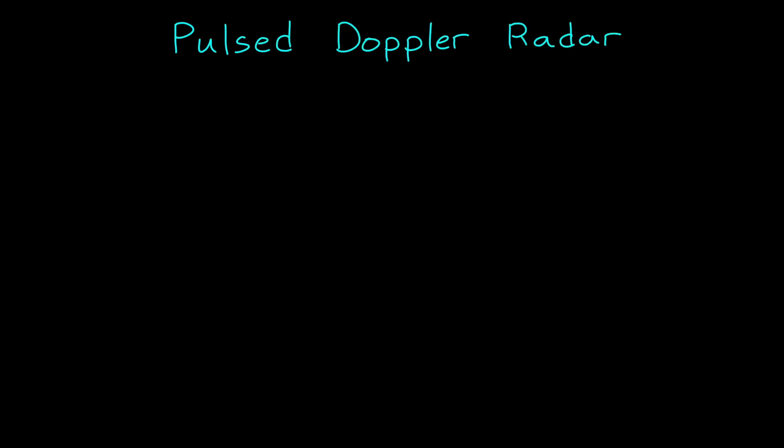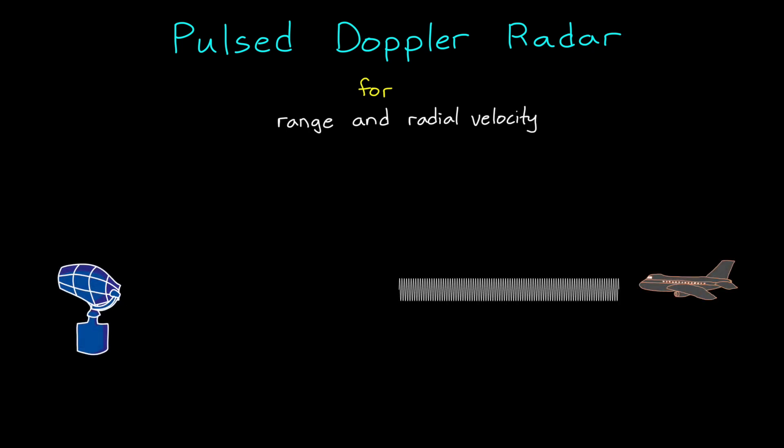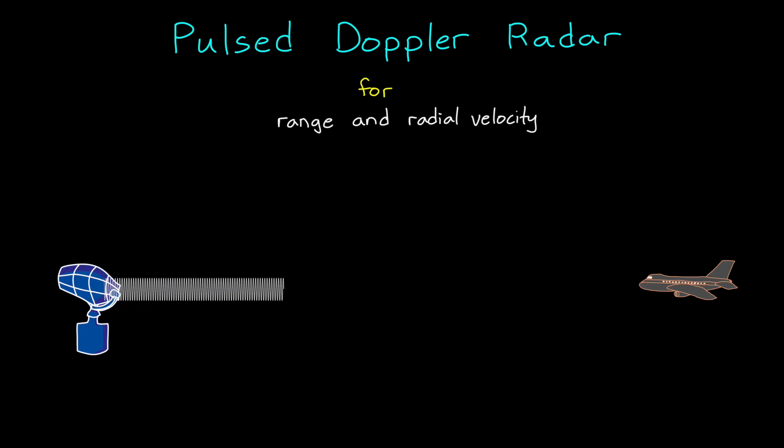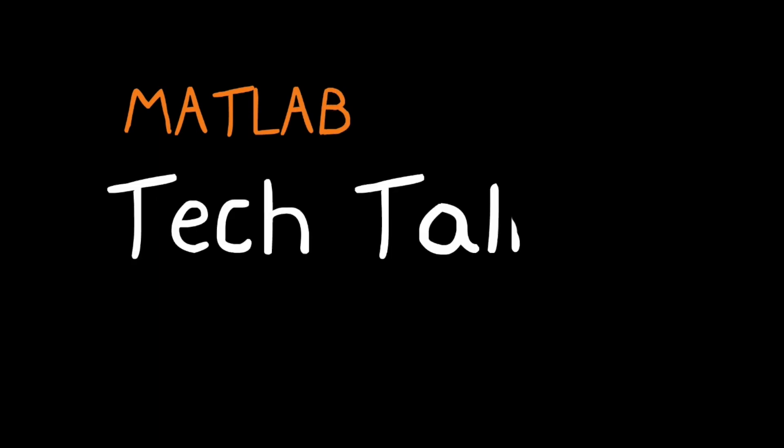In this video, we're going to introduce pulsed Doppler radar, and specifically I want to talk about how to determine range and radial velocity using a series of radar pulses. I think it's really interesting, and I hope this graphical introduction to the topic will provide a foundation on which you can build your knowledge going forward. I'm Brian, and welcome to a MATLAB Tech Talk.